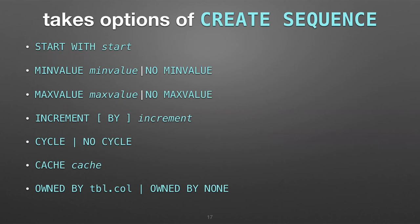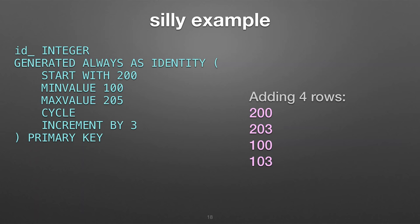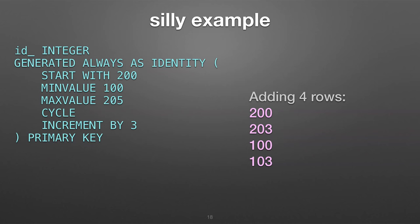When you set the max value, that means as soon as it hits that max, it would cause an error unless you use cycle. Here's a goofy example: if we start at 200, minimum is 100, max out at 205, cycle — cycle means go back to the beginning. So we start out with 200, our first row is 200, our next row is 203 because we're incrementing by three. When we go to add a third row we'd go to 206, but 206 violates the maximum. So because we said cycle, that means go back to the minimum and then increment by three — so we'll get 100 and then 103. It goes in these parentheses after 'generated always.'